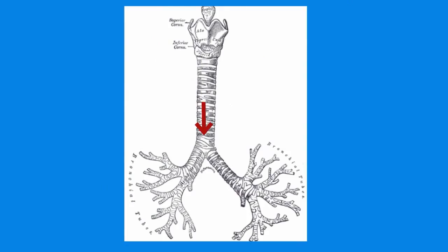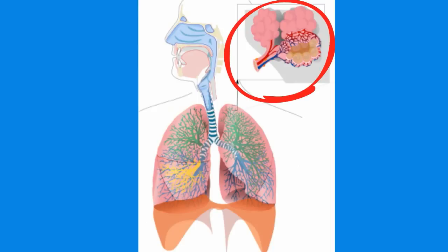Air travels down your trachea and into two tubes called the bronchus. You have a left and a right bronchus. The bronchus then branches into bronchi, which branch into even smaller tubes called bronchioles. At the end of the bronchioles are tiny air sacs called alveoli. At the alveoli, oxygen is exchanged for carbon dioxide.